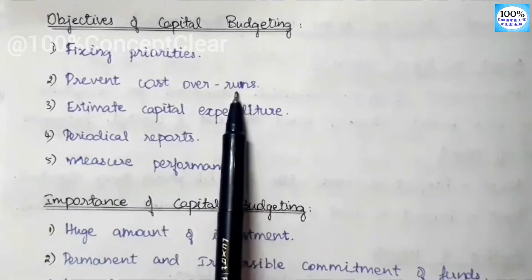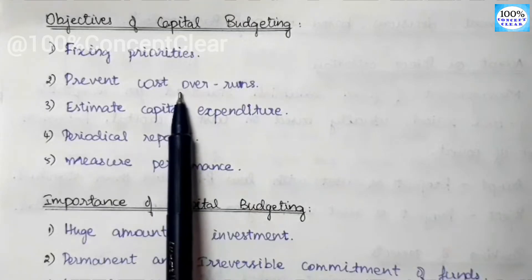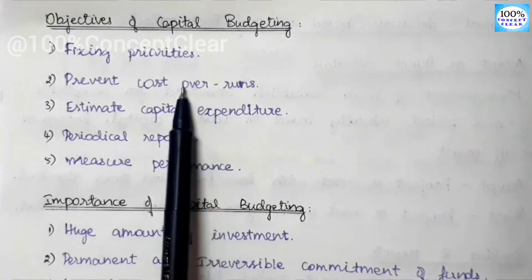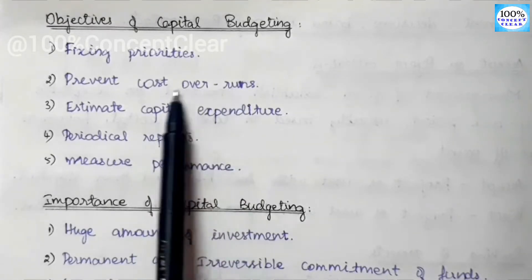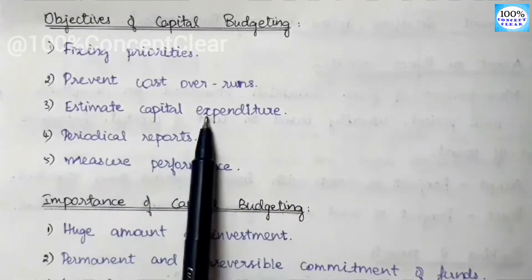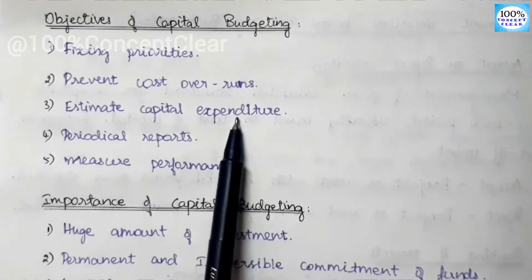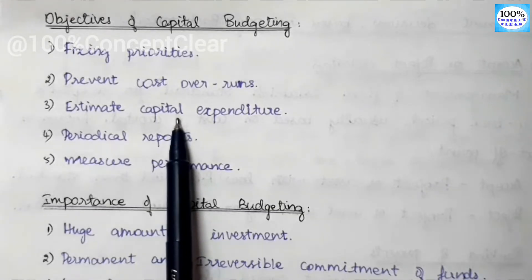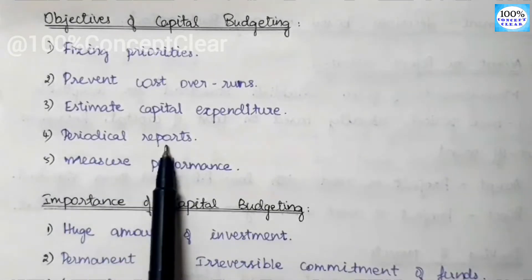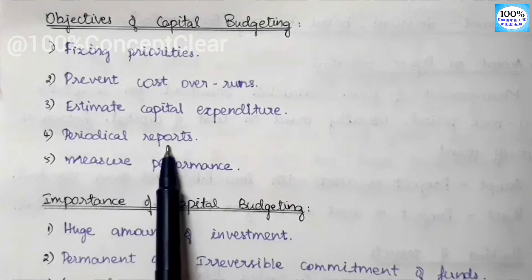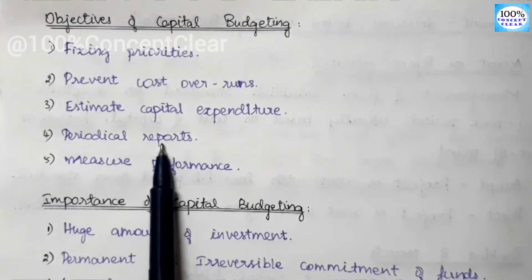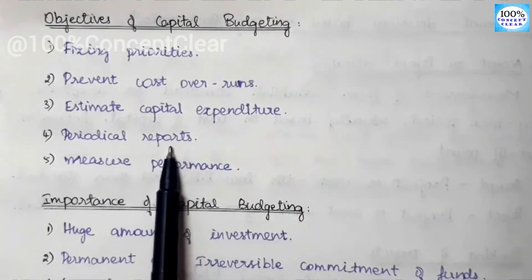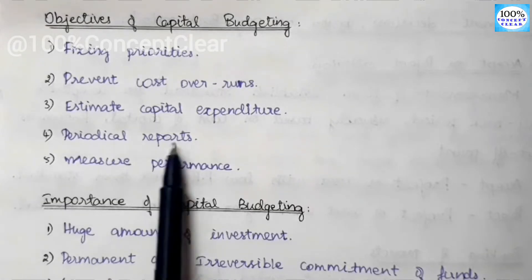The next objective is Prevent Cost Overruns. Since we have limited funds, we plan in the capital budgeting process how to control expenses. The third objective is Estimate Capital Expenditure — we need to estimate what the fixed assets are about and what each project requires. Next is Period Reports: we compare actual expenditures against the budget to reduce costs.